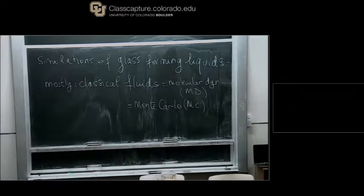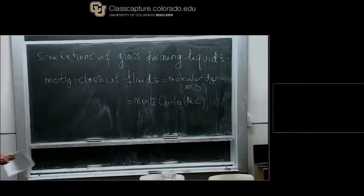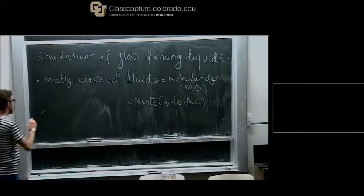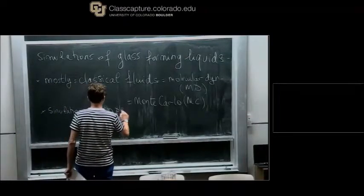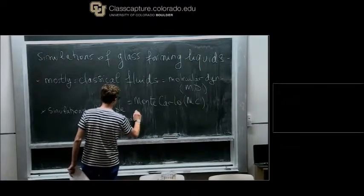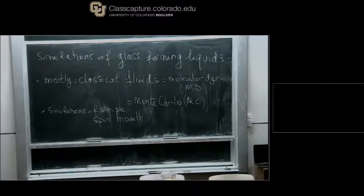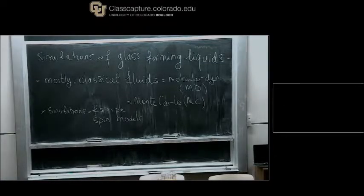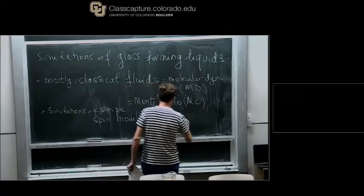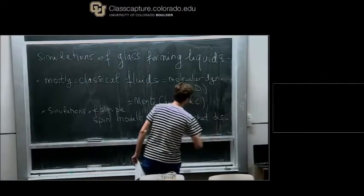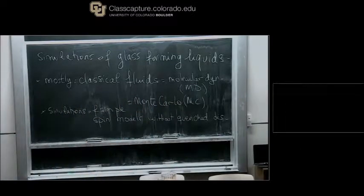In the field of glass-forming liquids we have many theories and phenomenological models. You could also do simulations of simple spin models, where the method is mostly Monte Carlo for spin systems. The spin models used to describe the glass transition can be spin-glass types of interactions, or spin models without quenched disorder — there are tons of models in this field. I won't discuss them much, but they exist and form a chapter if you want to be extensive about simulations of the glass transition problem.